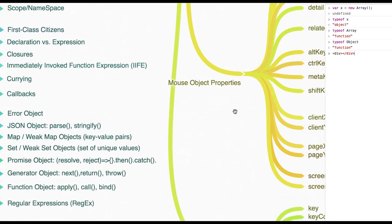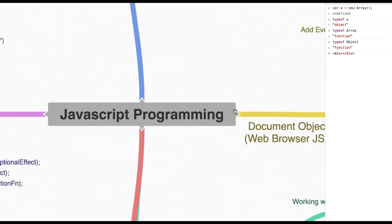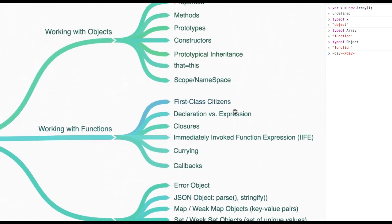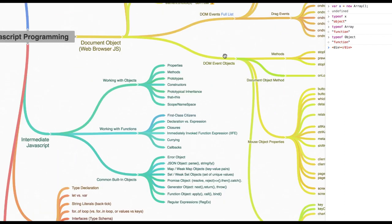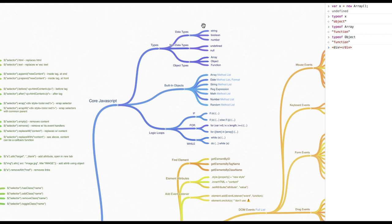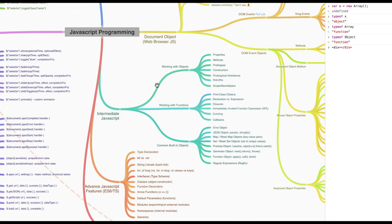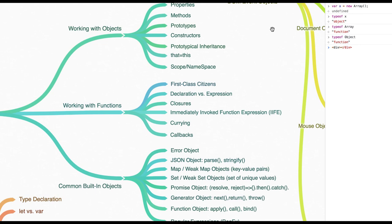Let me go back to my JavaScript programming graph and zoom in. So we already talked about the blue lines — core JavaScript — and now we are covering intermediate JavaScript.